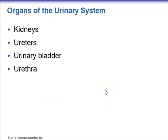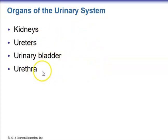The main organs of the urinary system include the kidneys, the ureters, the urinary bladder, and the urethra. There are two kidneys, two ureters, one urinary bladder, and one urethra where urine will leave the body.